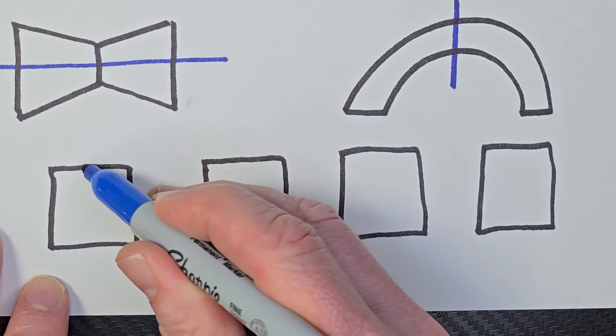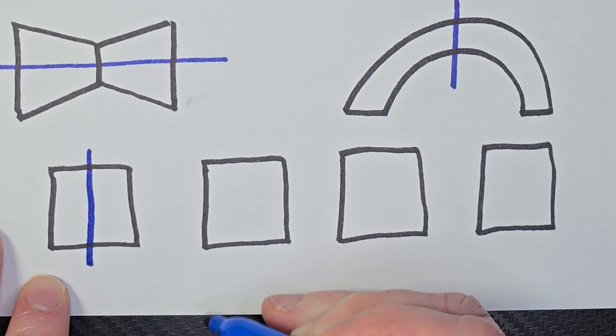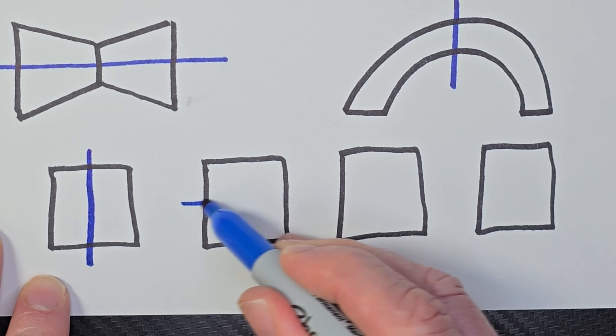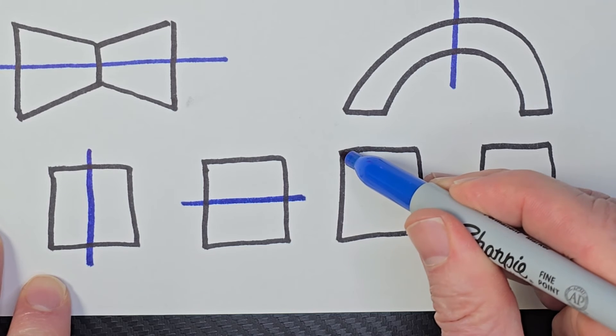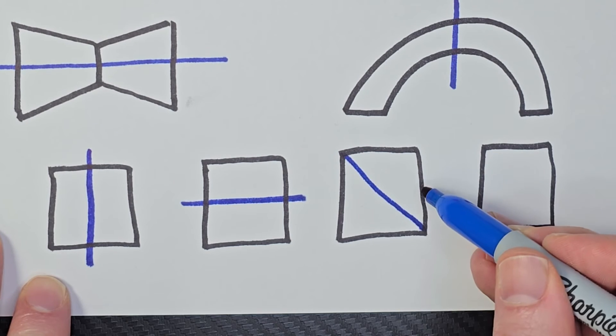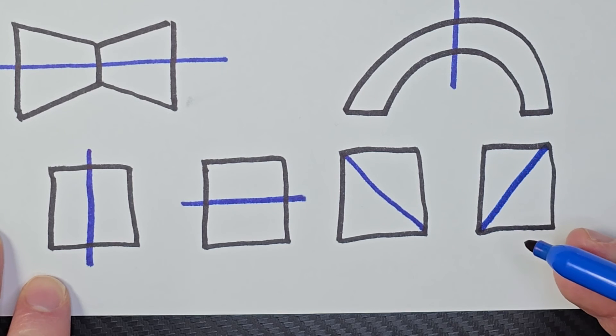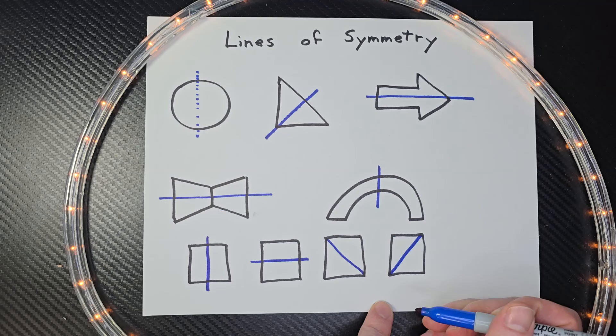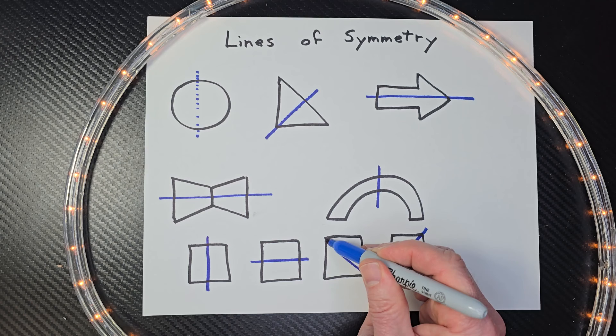Okay, we could put a line going this way. We could also put a line going this way, horizontal. Then I could put a line going that way. So I'd have two triangles. And I could put a line going that way, having two triangles. So these are my lines of symmetry right there.